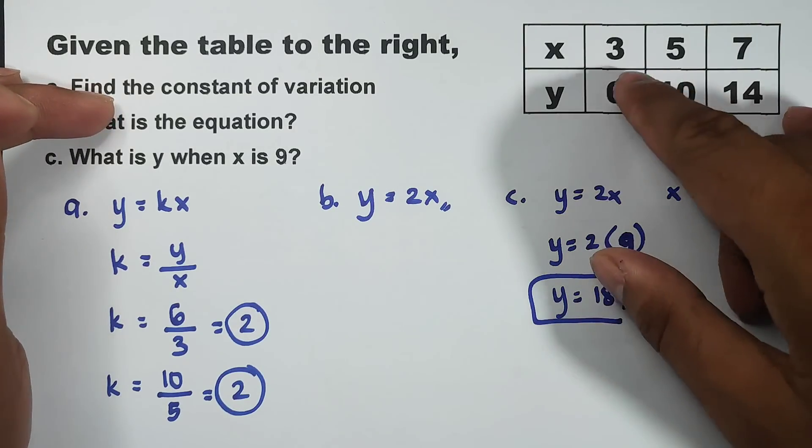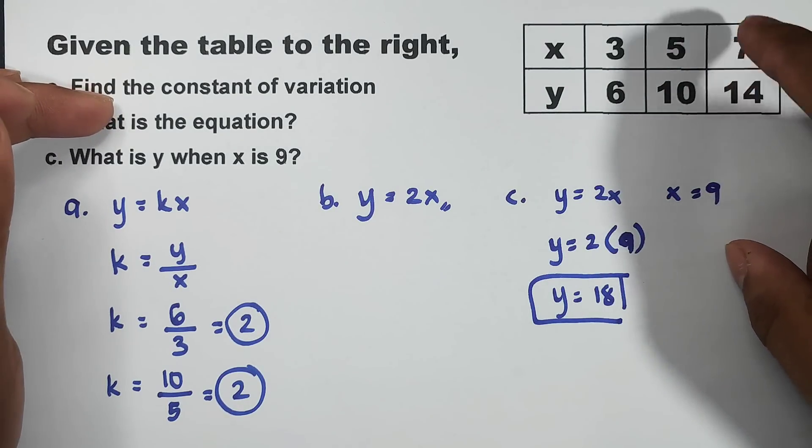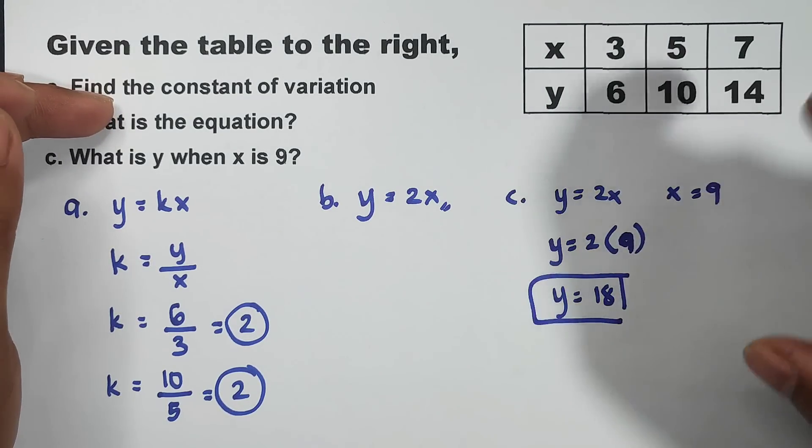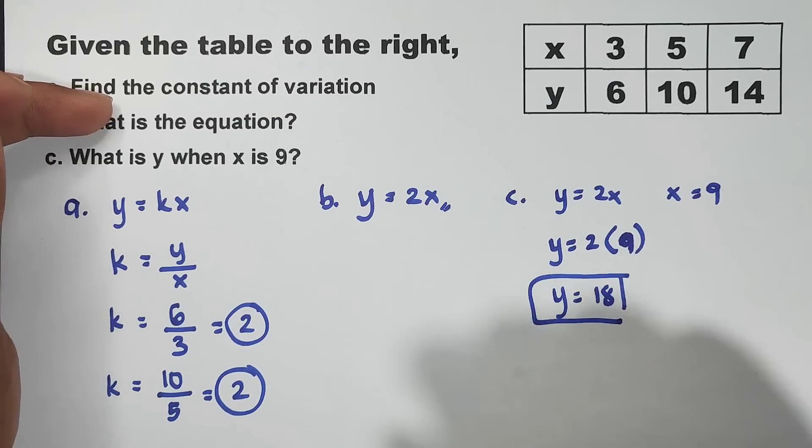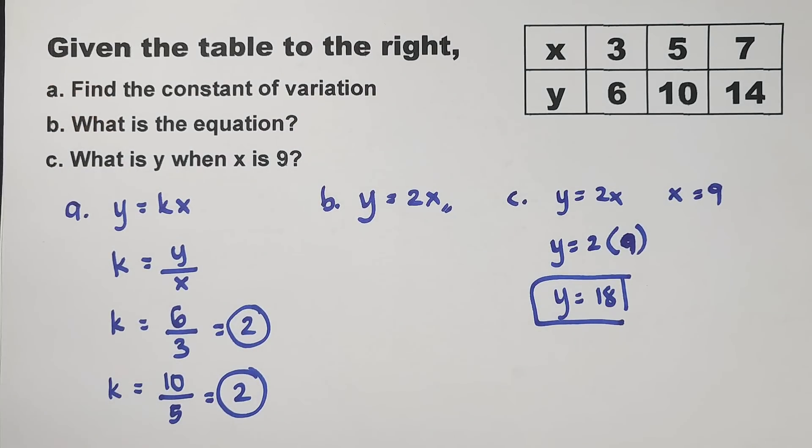So, notice, our x is increasing, 7 became 9. Our y should be greater than 14. And that's it. 18 is greater than 14. So, I hope you learned something from this video on how to find the constant of variation, the equation, and the missing value of a given problem.